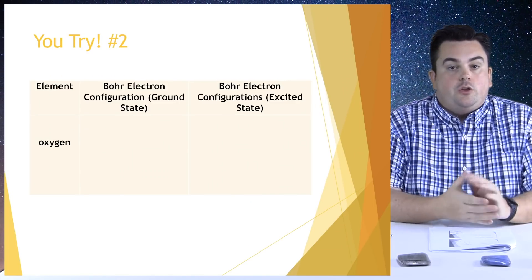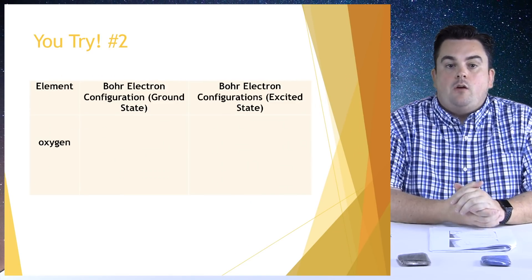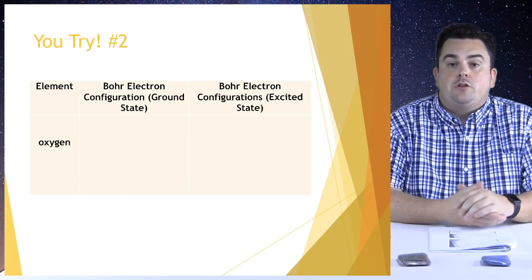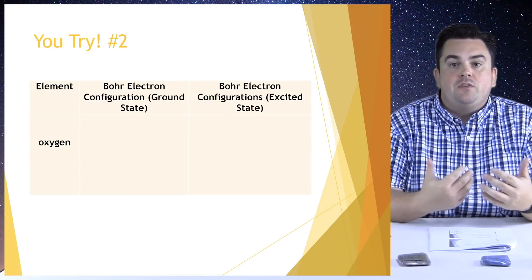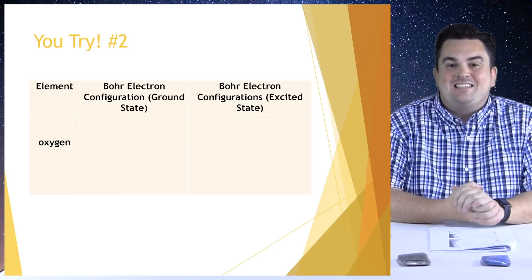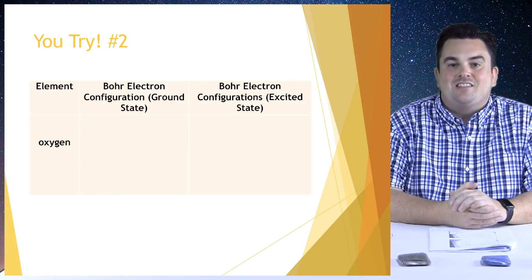You try number two. Use your reference tables and figure out the Bohr electron configuration in the ground state. And give at least three examples of excited state electron configurations for the element oxygen.